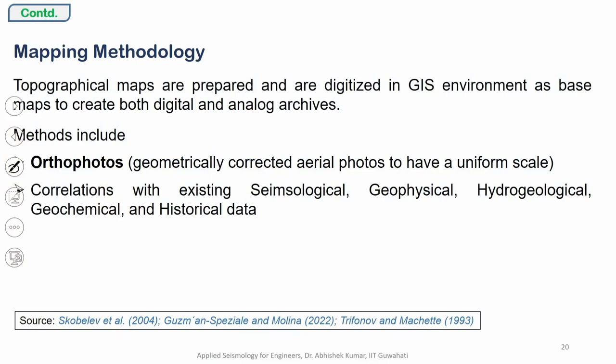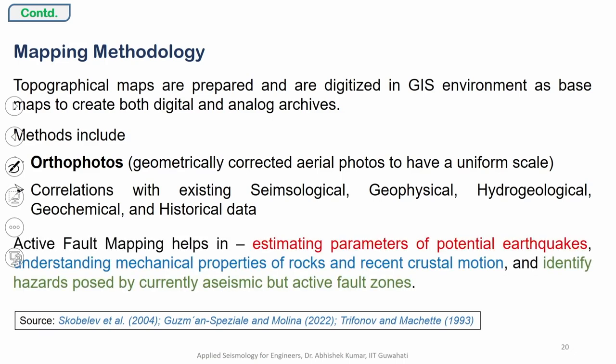One can go with mapping of features collected based on tomography, geological evidences, and also taking into account aerial photographs on uniform scale, then correlate the details with respect to seismological, geophysical, and hydrogeological information. Active fault mapping helps in estimating parameters for potential earthquakes, understanding the mechanical properties of rocks in subsurface medium, and even in terms of recent crustal movement. Collectively this will also be helpful in identifying the potential hazard in a particular region.